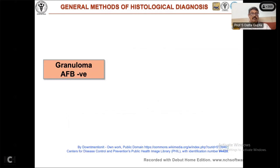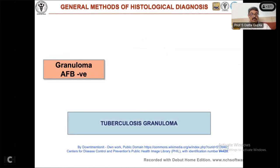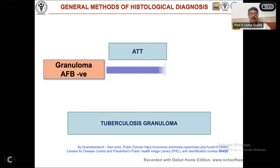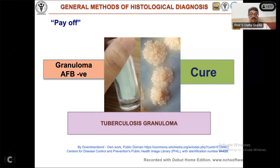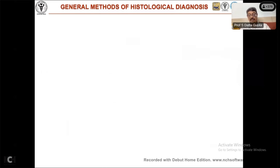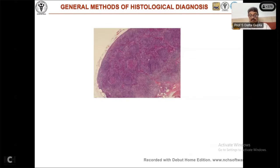Another approach: suppose there's a granuloma and it's AFB negative — in our country the most common diagnosis is tuberculosis, so you put the patient on ATT whether the AFB is positive or not. If the patient does well, your diagnosis stands. These are payoff systems. Of course if you have a culture, that is the best.